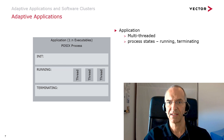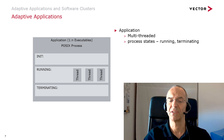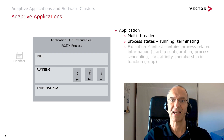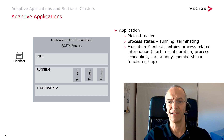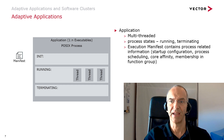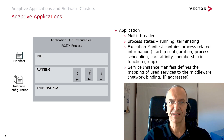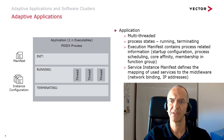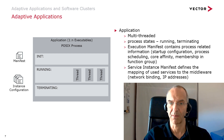A process is started by the execution manager and reports back when it successfully reached its running state. The execution manager gets its information about the process from the execution manifest. There it reads about potential startup configuration and the process scheduling. A service instance manifest maps the service interfaces our application is going to use to the middleware. It defines the network binding, for instance some IP and the corresponding IP addresses.